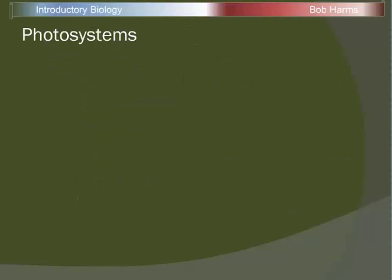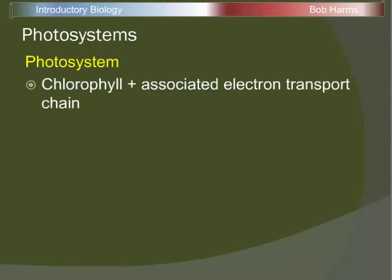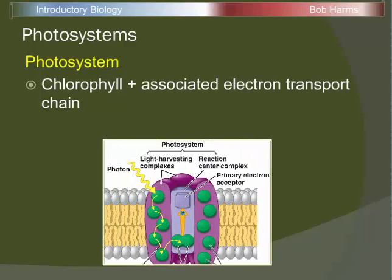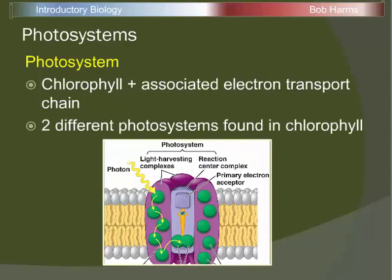Chlorophyll doesn't do this whole process of the light-dependent reactions on its own. Instead, chlorophyll is associated with a couple of groups of chemicals called photosystems. A photosystem is a chlorophyll pigment plus all the associated chemicals in the electron transport chain — all the other proteins in the metabolic pathway plus chlorophyll makes up a photosystem. In chloroplasts, there are two different photosystems. The chlorophyll represents the green, and all the other dots within that protein represent members of the electron transport chain.